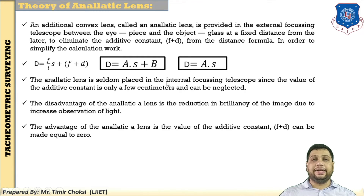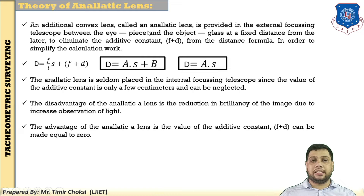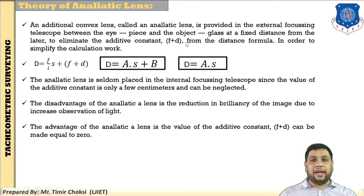Next theory: Theory of Analytic Lens. In this theory, the tachymetry constant B means F plus D equals zero. When an additional convex lens is used between the eyepiece and the object glass, it is called an analytic lens. This additional convex lens, called an analytic lens, is provided in the external focusing telescope between the eyepiece and the object glass at a fixed distance from the latter, to eliminate the additive constant. The analytic lens is used to simplify the distance formula calculation.